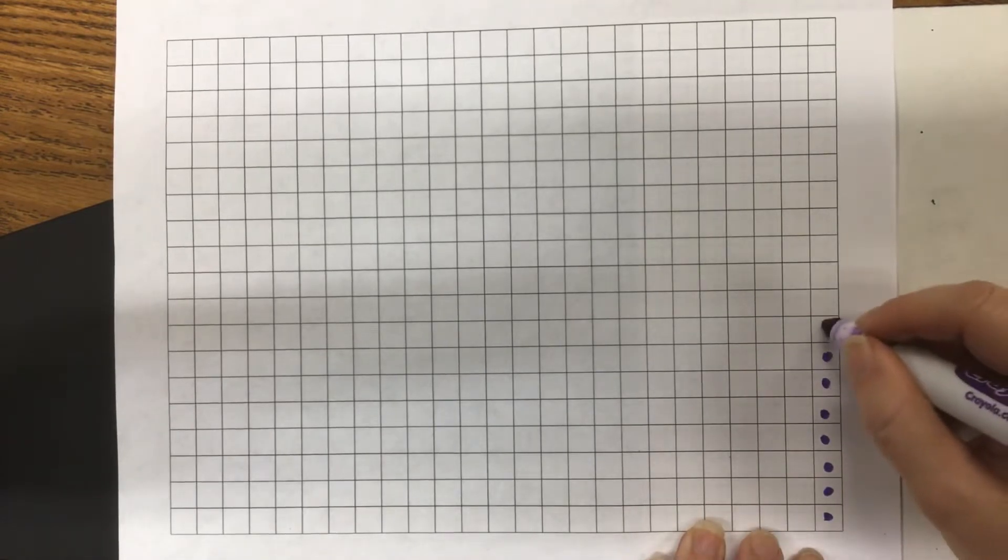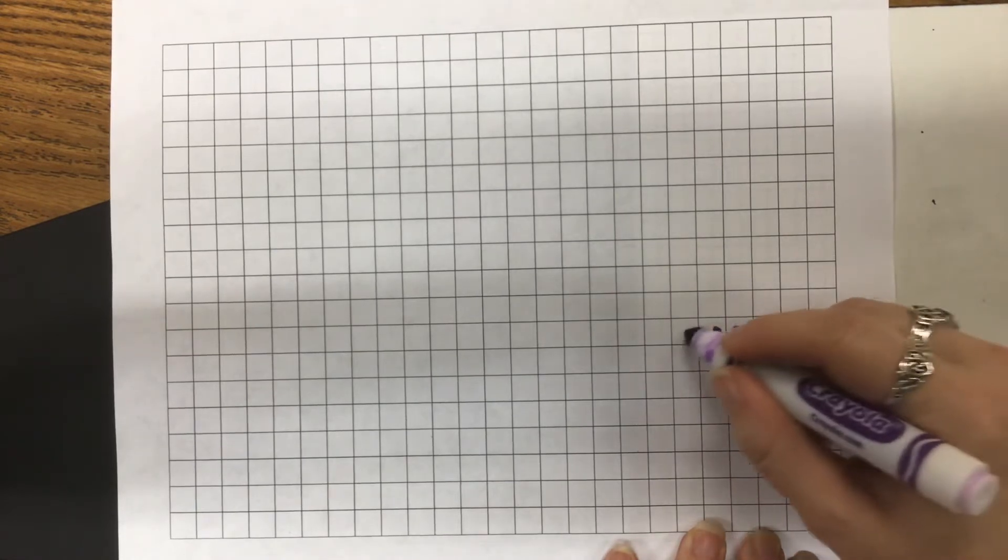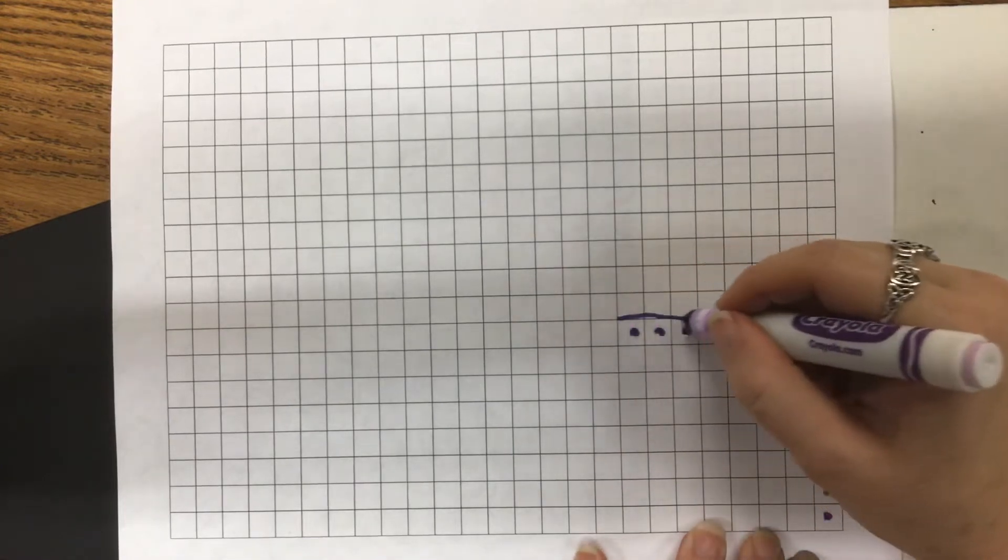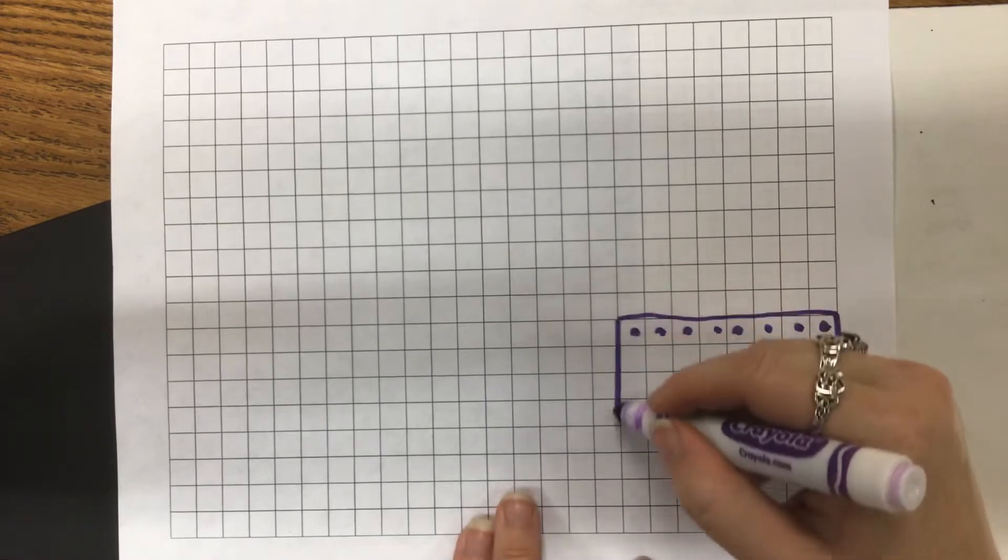And then I'm gonna make it one, two, three, four, five, six, seven, eight. Notice that I counted my dot in the corner for both dimensions. I did it for the length and the width, and I know this is gonna make a square because both sides were eight.